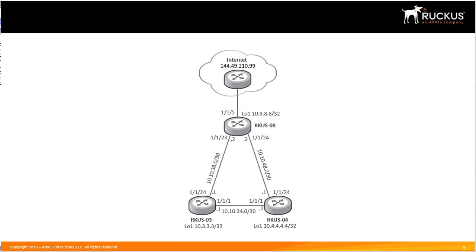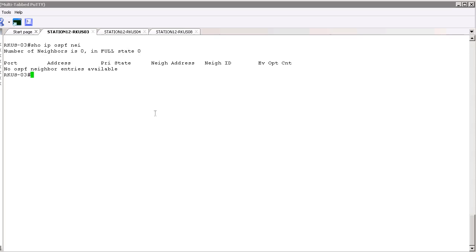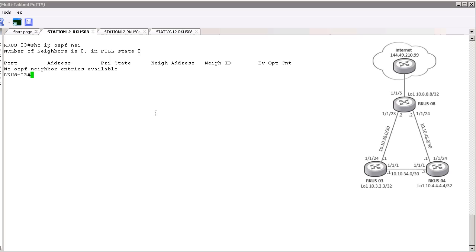The topology you see here is the one we're going to be working with. We're going to first explore the neighbor adjacencies with Router 3. Right now it's supposed to have two OSPF neighbor adjacencies and it has none, so we're going to look at that and try to figure out what's going on. Let's jump into the CLI. The first thing we're going to do is show IP OSPF neighbor to see where we're at, and indeed we have no neighbor adjacencies.